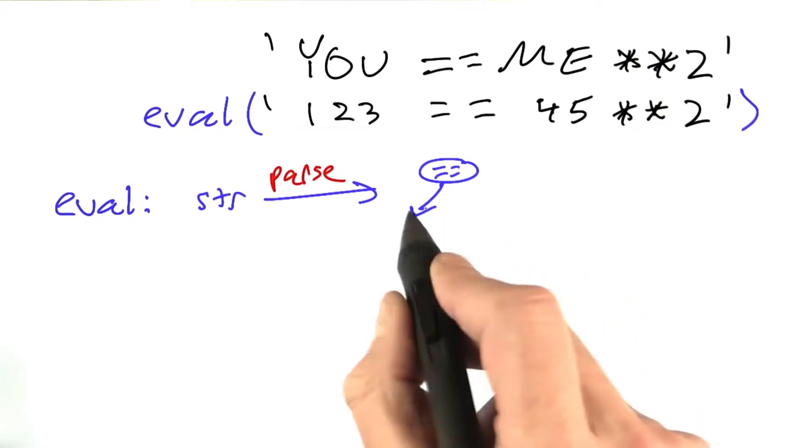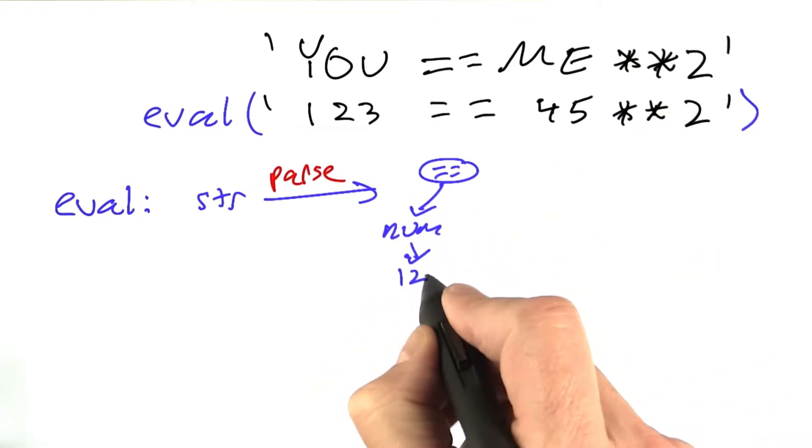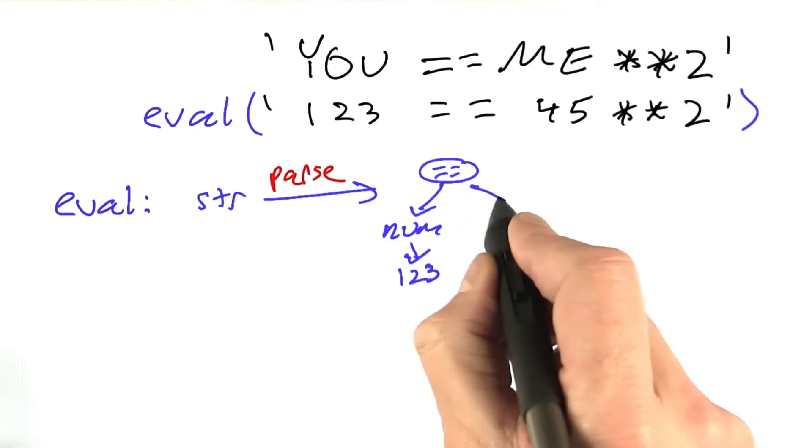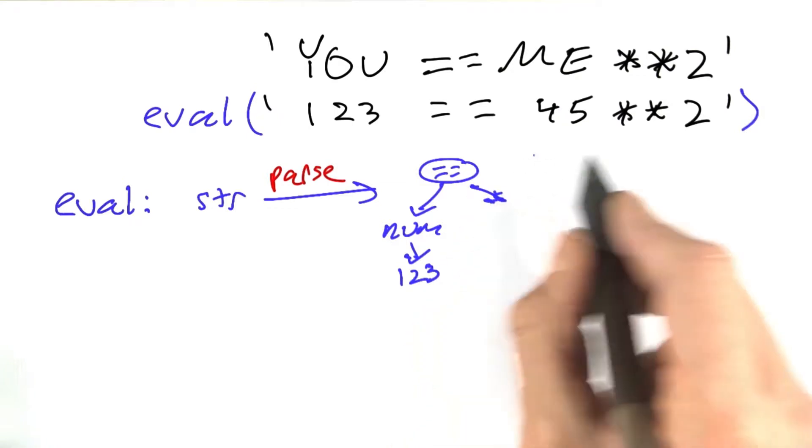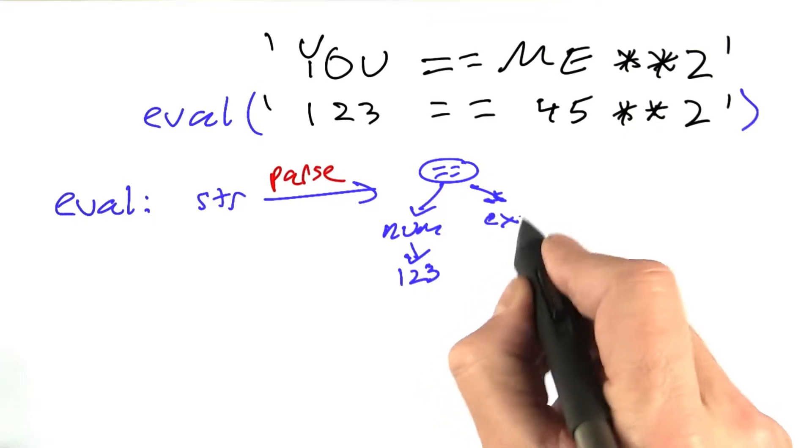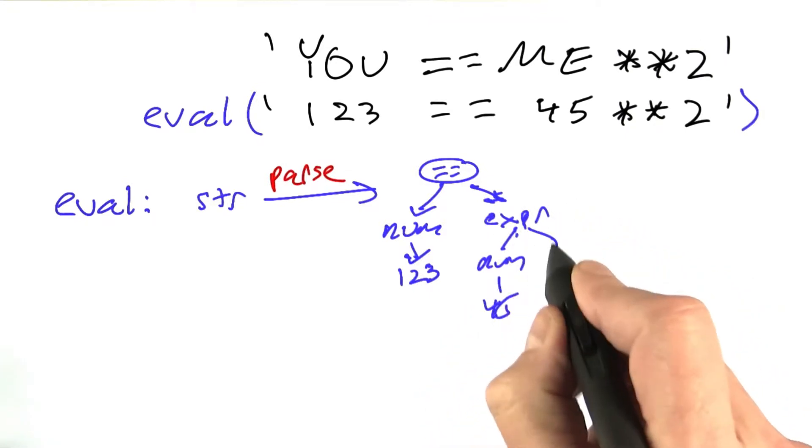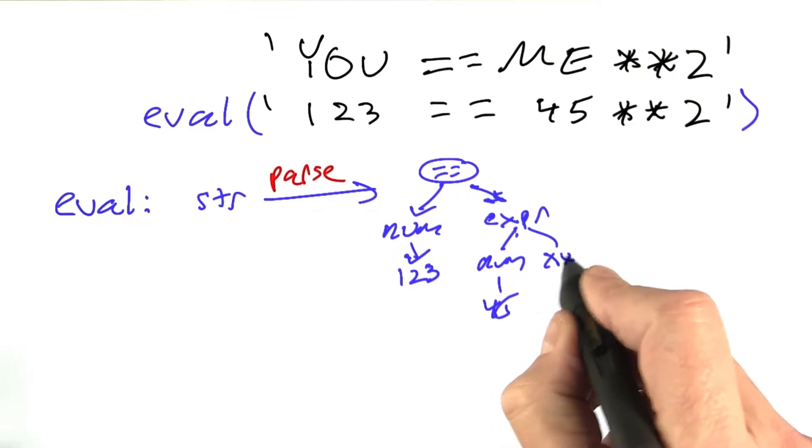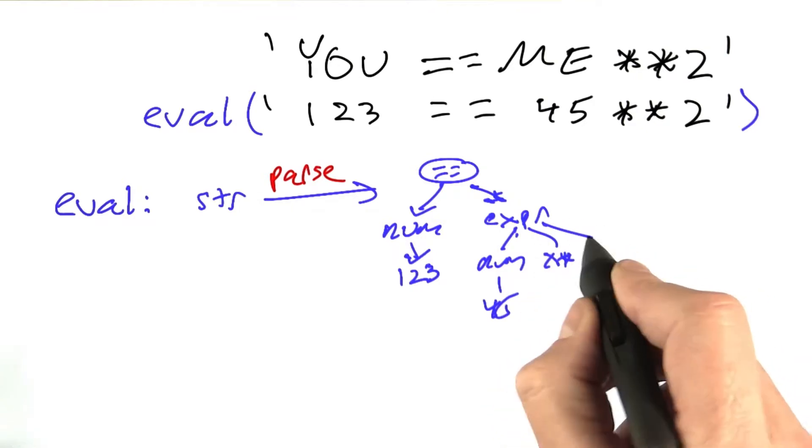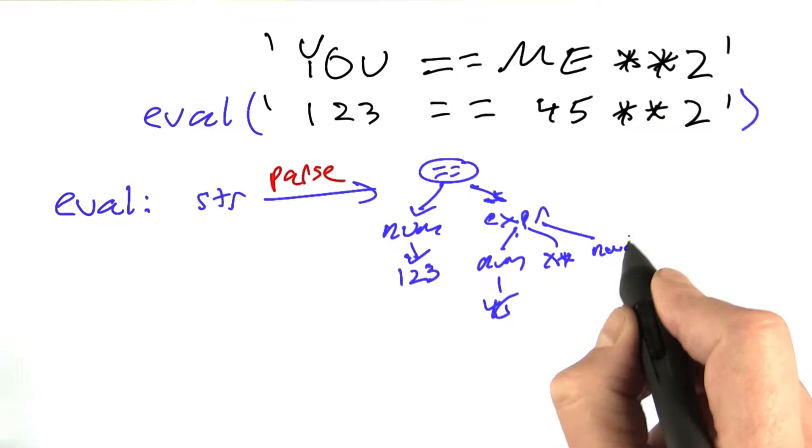and it has an operator, which is a number, which is 1, 2, 3, and another operand, which is an expression, which has a number 45, and then the exponentiation operator, and then the number 2.